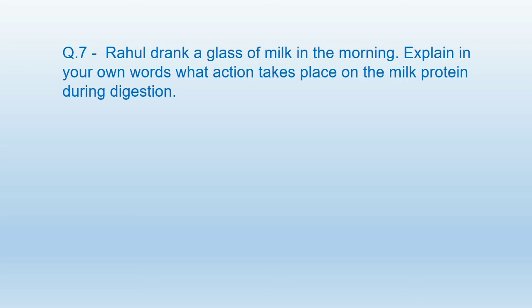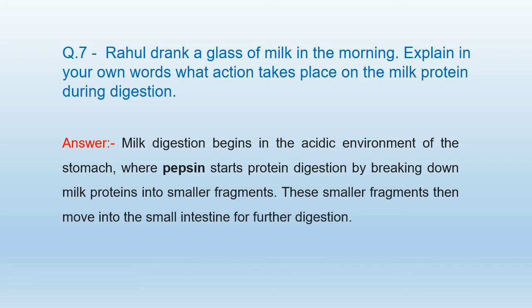Question number 7: Rahul drank a glass of milk in the morning. Explain in your own words what action takes place on the milk protein during digestion. The answer is: Milk digestion begins in the acidic environment of the stomach, where pepsin starts protein digestion by breaking down milk proteins into smaller fragments. These smaller fragments then move into the small intestine for further digestion.